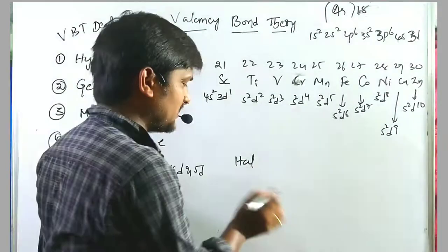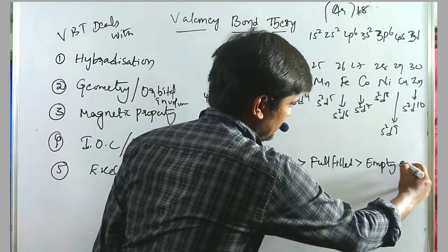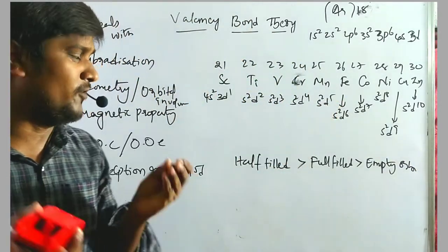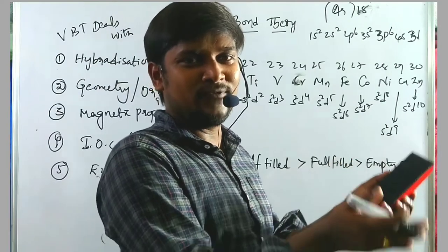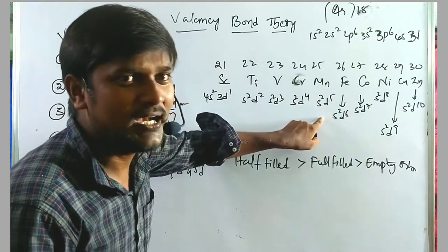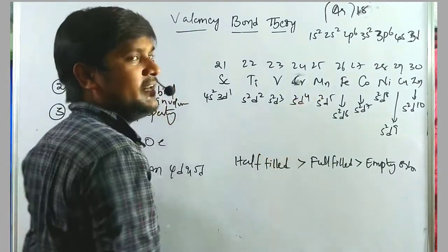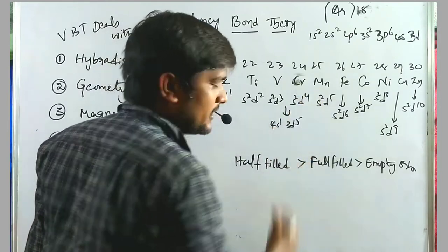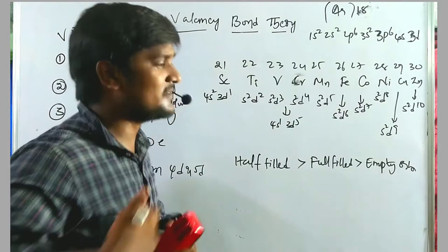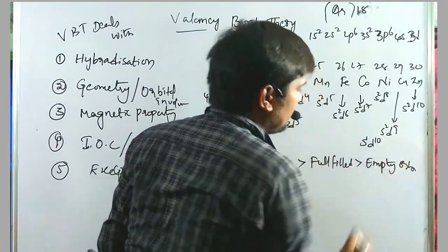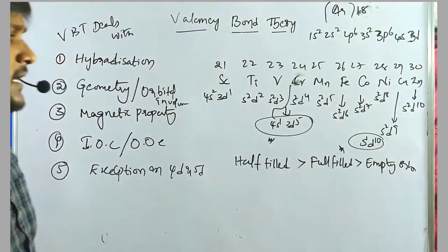Regarding orbital stability: half-filled configuration (d⁵) is more stable than full-filled (d¹⁰), and full-filled is more stable than empty (d⁰). Chromium is very close to d⁵, so to achieve stability, one 4s electron jumps to 3d⁴, giving 4s¹3d⁵. Similarly, copper is close to d¹⁰, so its 4s electron jumps, giving 4s¹3d¹⁰. These two are exceptional configurations.